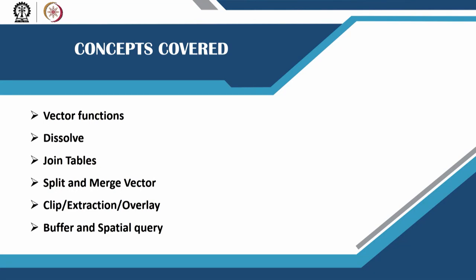Today we will cover these concepts: the first one is vector functions, specifically the dissolve function — how to dissolve various polygons into one single polygon. Then joining tables: if we have an Excel sheet with population data, we can bring it into QGIS and join it with the present vector layer. We can also split vectors — for example, splitting a lake into two equal parts — and merge two different vector layers into a single layer. Finally, we will see how to clip or extract or overlay for a particular road segment, and how to do a buffer analysis and a spatial query.